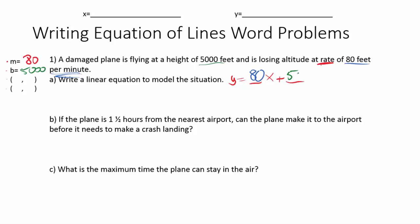There is a mistake here. The plane is losing altitude, which means this is a rate of change that is decreasing, so we need a negative sign in front of the 80. The slope should be negative 80, giving us y equals negative 80x plus 5,000. The plane is losing altitude, so that negative slope makes sense.